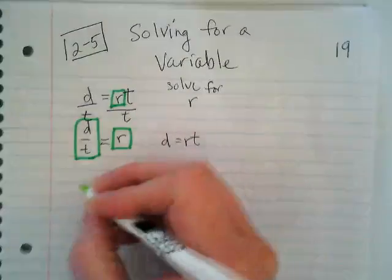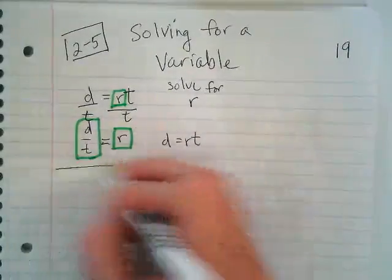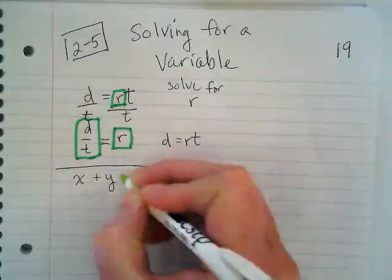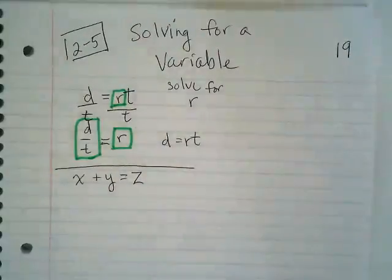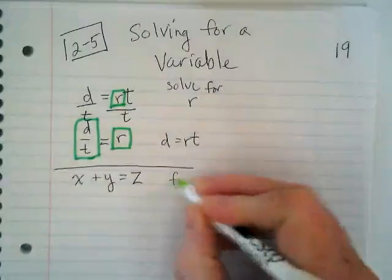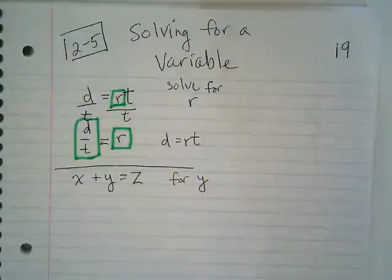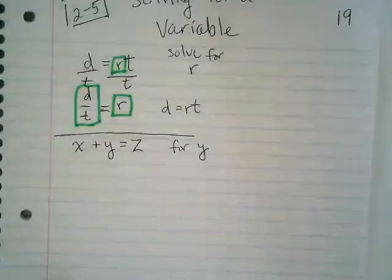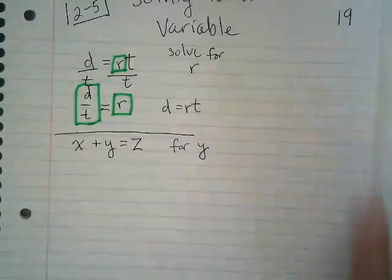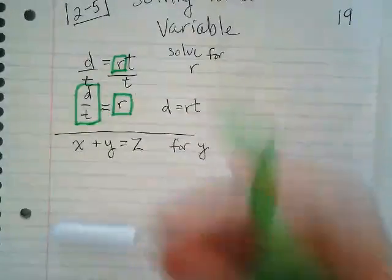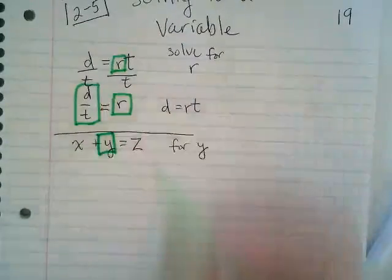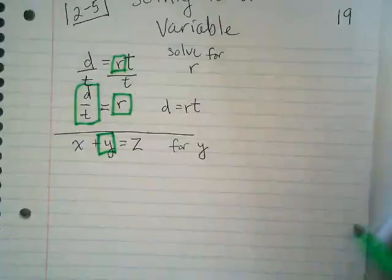Let's try something else that looks pretty simple. X plus Y equals Z. And we're going to solve for Y. This is our target. We want to get that Y by itself on one side of the equal sign.